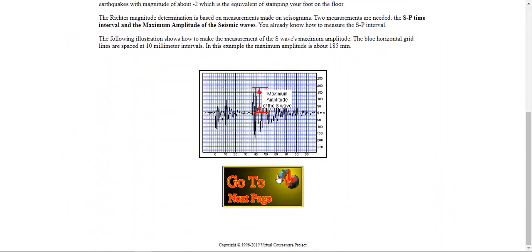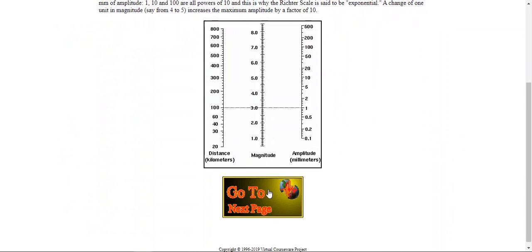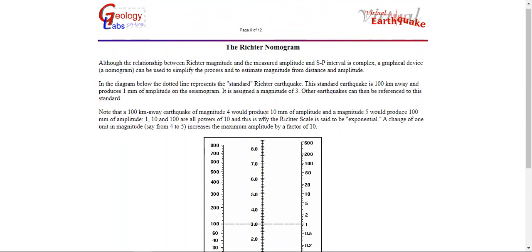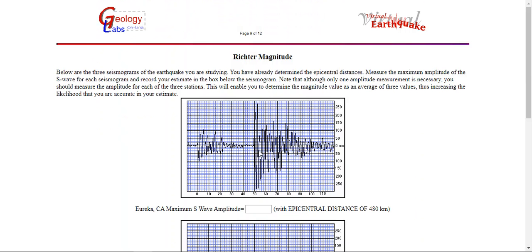Now we're going to compute the Richter scale or the amplitude. This will give us the magnitude of the earthquake. What we do is we always measure from the rest line to the crest of the highest amplitude. So for this amplitude, we're going to look between 200 and 250. Each of these blue lines—this was over 250—so this was 290.